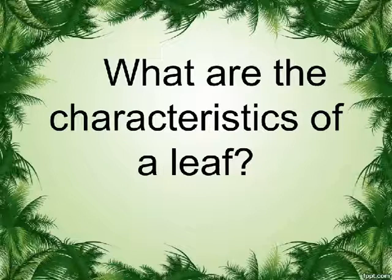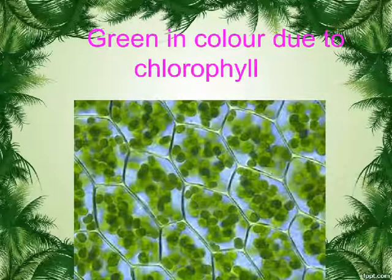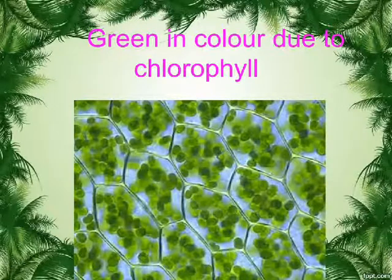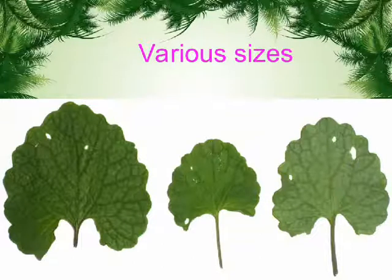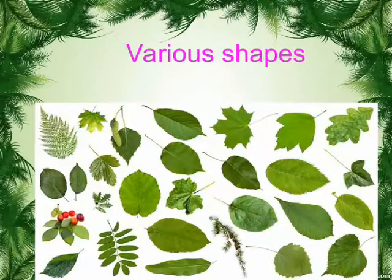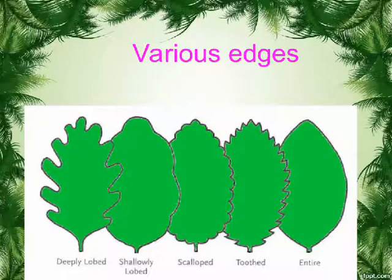What are the characteristics of a leaf? Leaves are green in color due to chlorophyll, come in various sizes, various shapes, and have various edges.